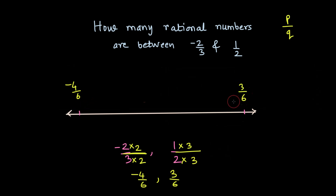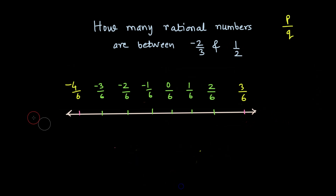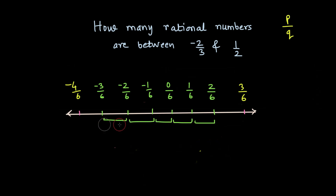Now I will change the numerator while keeping the denominator, traveling from left to right. Plotting rational numbers: -3/6, -2/6, -1/6, 0/6, 1/6, 2/6, and then 3/6. Counting: 1, 2, 3, 4, 5, 6. But can I say there are only six rational numbers between the two? No — that would be a big mistake, because the small distances between these points can still be divided further.